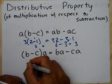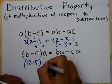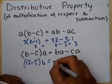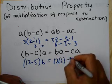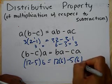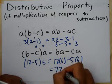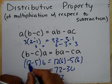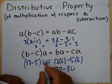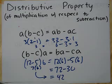Let's try it the other way: (12 minus 5) times 6. It should be the same as 12 times 6 minus 5 times 6, which is 72 minus 30 equals 42. And 12 minus 5 is 7, times 6 is 42. It works!